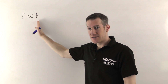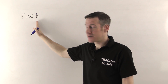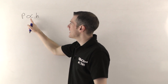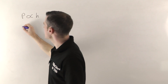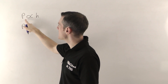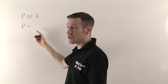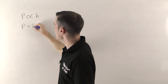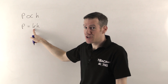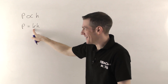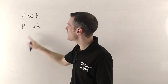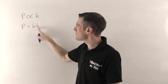Now if you ever see that proportional symbol, it's no good to you as it stands — you can't do any maths with it. What you need to do is convert it into an equation. Wherever you see that proportional sign, you can always replace it with an equals sign, as long as you stick a constant on the other side. So if P is proportional to h, then P equals some constant K times h. They always tend to use K — K for constant, maybe — but you could use any letter you like.